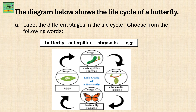The diagram below shows the life cycle of the butterfly. Label the different stages in the life cycle. Choose from the following words: butterfly, caterpillar, chrysalis, egg. It has already been labelled for you.